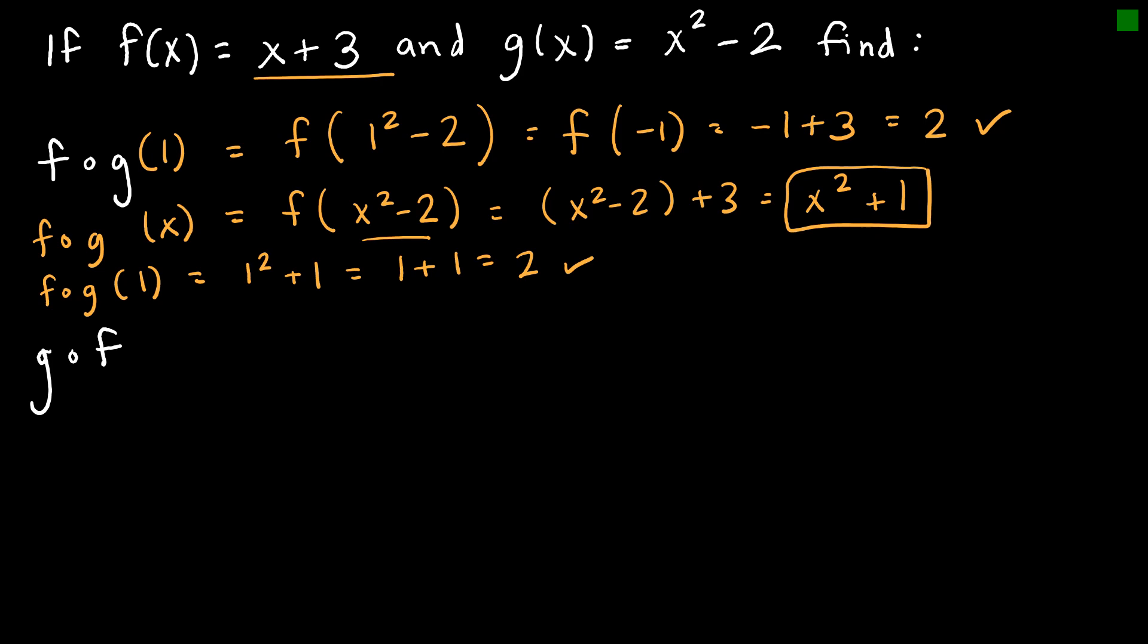So let's do the exact same thing this time for G of F of X. And we're going to start actually with G of F of 1 like we did on the last example. And so I'm saying let's take G of F of 1. F of 1 is 1 plus 3. And that means I'm taking G of 4. And G of 4 would be 4 squared minus 2. 4 squared minus 2 is 16 minus 2, or 14.